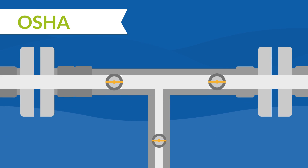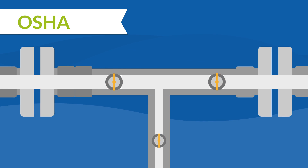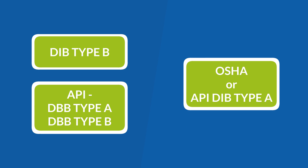In contrast, OSHA defines only one double block and bleed valve system as the closure of a line, duct, or pipe by closing, locking, or tagging two inline valves and by opening, locking, or tagging a drain or vent valve in the line between the two closed valves.